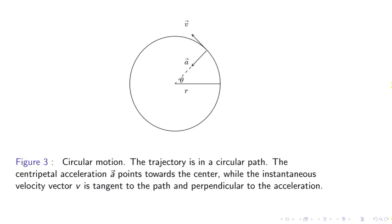In circular motion, we may have angle theta and R being the radius. And so, motion along the circle. The velocity vector is tangent to the path and perpendicular to the acceleration.